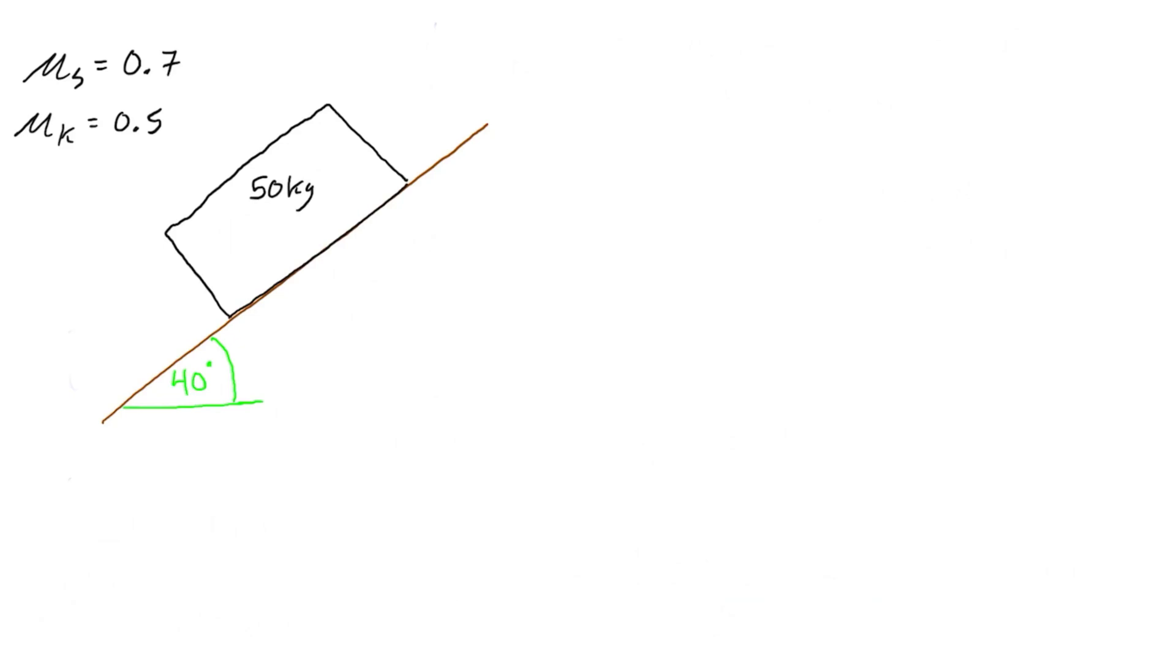So to get started, you'll see that we have up here the static coefficient of friction 0.7 and the kinetic coefficient of friction 0.5. So we're going to check first with the static coefficient of friction to see if it's big enough, if it can provide a big enough friction force to hold the block in place.